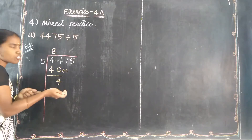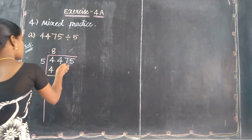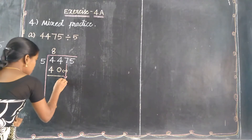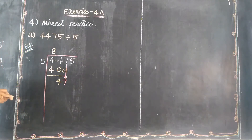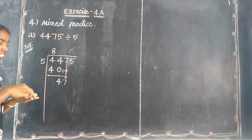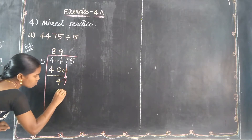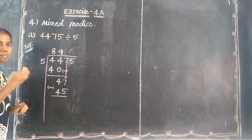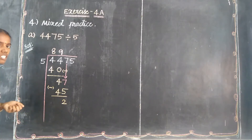Next, consider 47. We check: 8 × 5 = 40, 9 × 5 = 45, 10 × 5 = 50 — too large. So 9 times: 9 × 5 = 45. Subtract: 47 minus 45 = 2. Remaining is 2. Then bring down the next digit: 4 minus 4 = 0. Bring down 5, so the next value is 25.